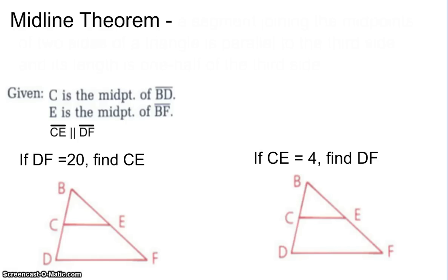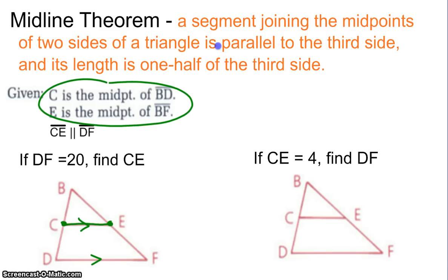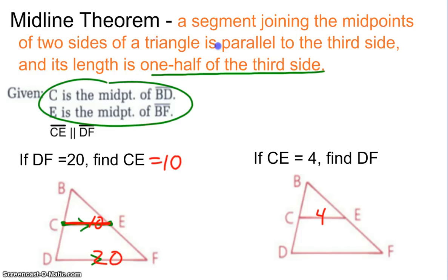Another concept is the midline theorem. The midline theorem states that a segment joining the midpoints of two sides of a triangle — in this case CE connecting the midpoints — is parallel to the third side. If that is true, then it equals one half of that third side. So if DF is 20, then CE must be half of that, so CE equals 10. We can also go the other direction: if CE is 4, then DF equals 8.